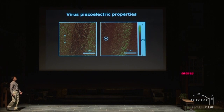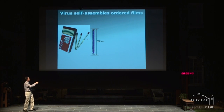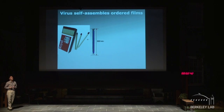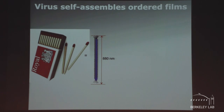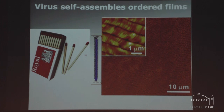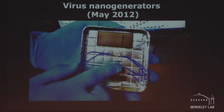Another amazing feature is that these materials are identical copies and behave like magic sticks. At low concentration there is no order, but at sufficient concentration all the viral particles self-assemble into ordered structures. When we place this ordered material between two electrodes and press it, it begins to generate electricity. This is the first demonstration of operating a microelectronics device using virus-based electricity.